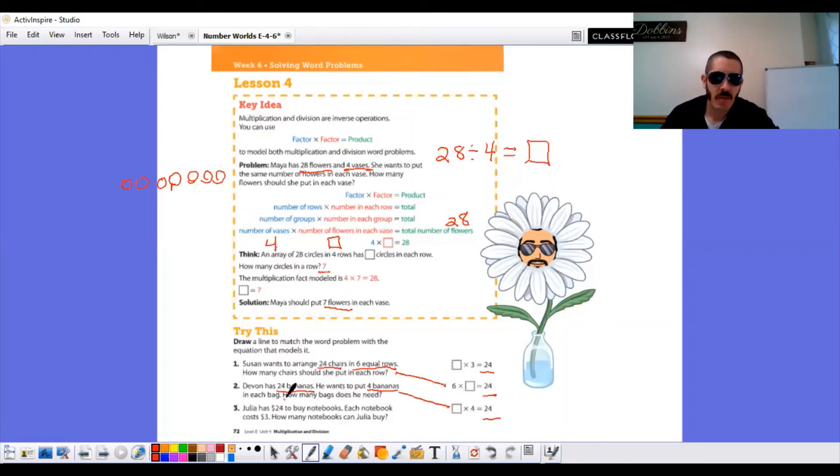And the last one, Julia has $24 to buy notebooks. Each notebook costs $3. How many notebooks can Julia buy? $24 is our total. Each individual notebook costs $3. So that's going to be our second factor. And that matches with this multiplication sentence or equation. Blank times three equals 24.